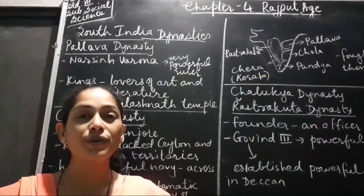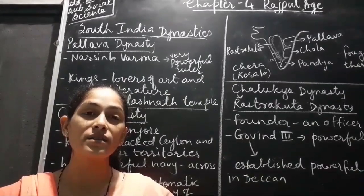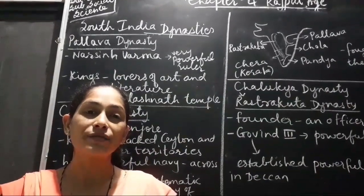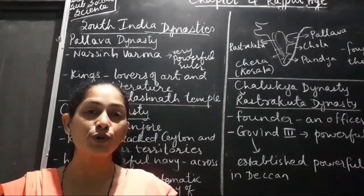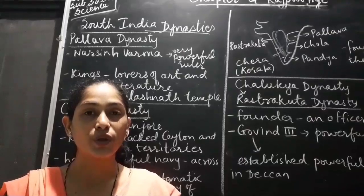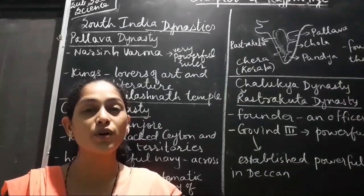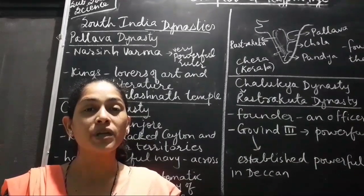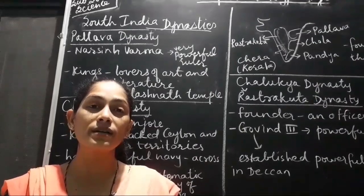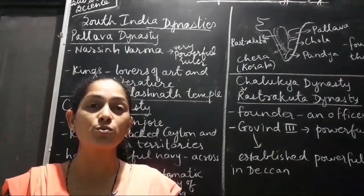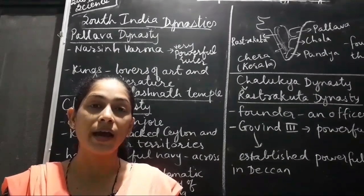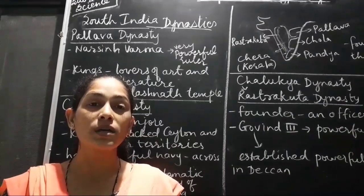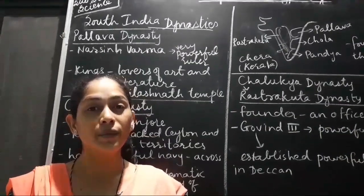In this video we are going to learn about the dynasties of South India. After the demise of Pulkeshi II, who was one of the rulers of the Chalukya dynasty, his whole kingdom was disintegrated into small parts and this is how different dynasties arose in South India also.